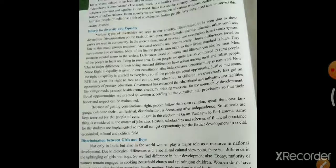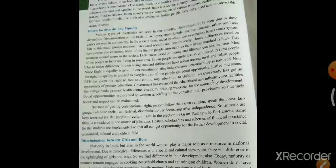Castes are seen in our country. In ancient times, the social structure was occupation-based — the varna system. पहले वर्ण system occupation के हिसाब से थी। जो बहुत brave था उसे क्षत्रिय, जो पूजा करते थे उन्हें ब्राह्मण बुलाया जाता था। अभी ऐसा नहीं है — अभी जहाँ जन्म हुआ, उसके हिसाब से caste system है।